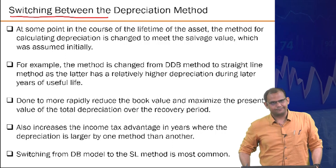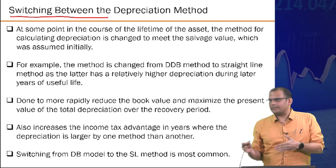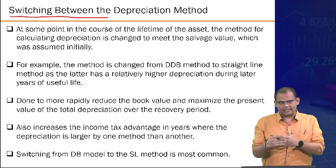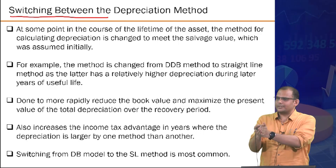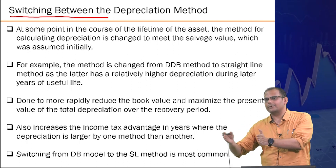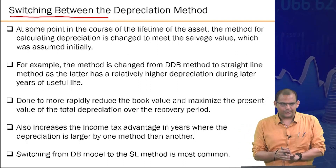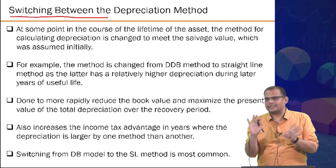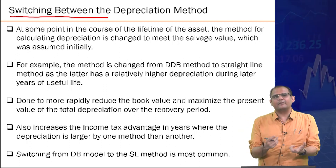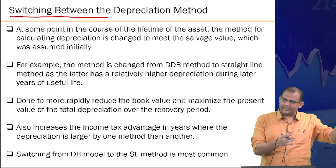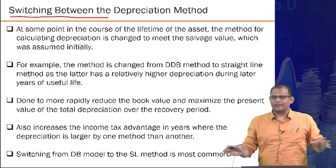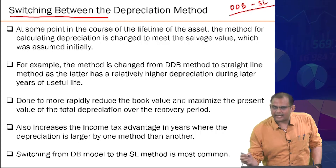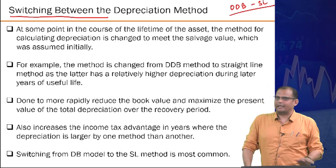This is the switching problem between depreciation methods. The most common and practically important switch is from DDB to straight line (SL). DDB provides steeper depreciation early on, but in later years the straight line method provides higher depreciation than DDB. Switching is done to maximize the present worth of total depreciation over the recovery period, which maximizes tax benefits.